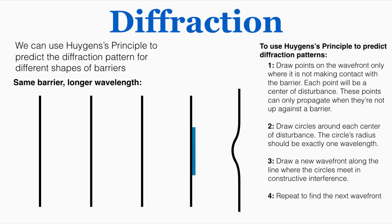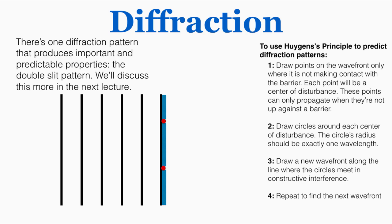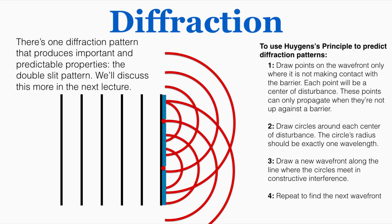There's one diffraction pattern that produces important and predictable properties — the double slit pattern. This is what occurs when two small openings are made that the wave can move through. When this happens, the waves radiate out and there are going to be certain points of constructive and destructive interference. We'll talk about that more in a separate video on the double slit experiment.